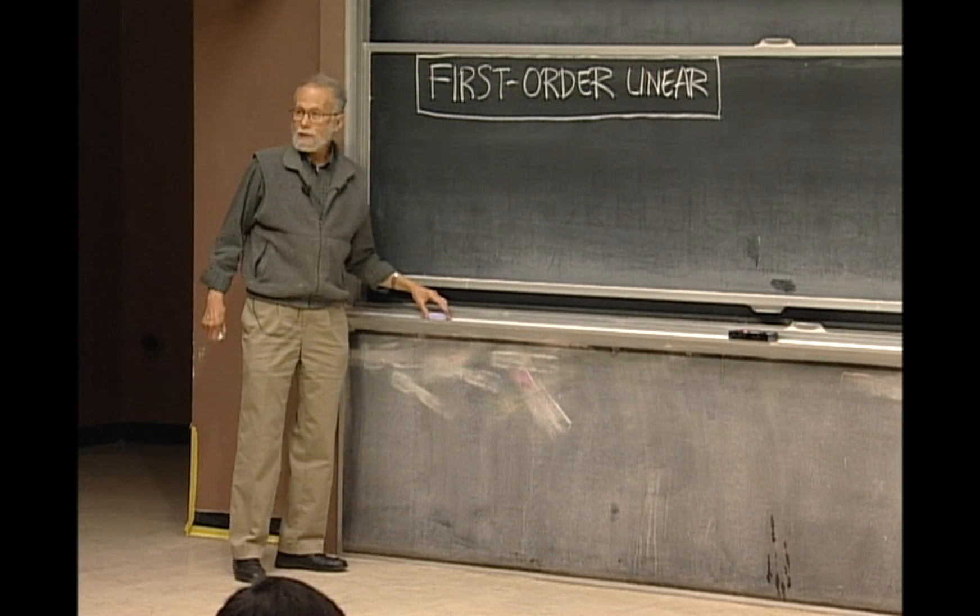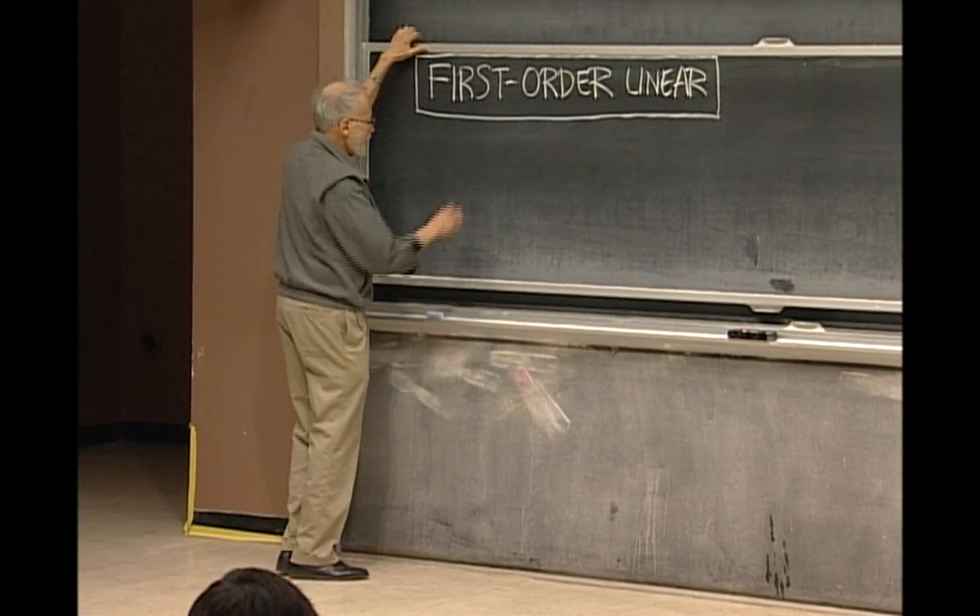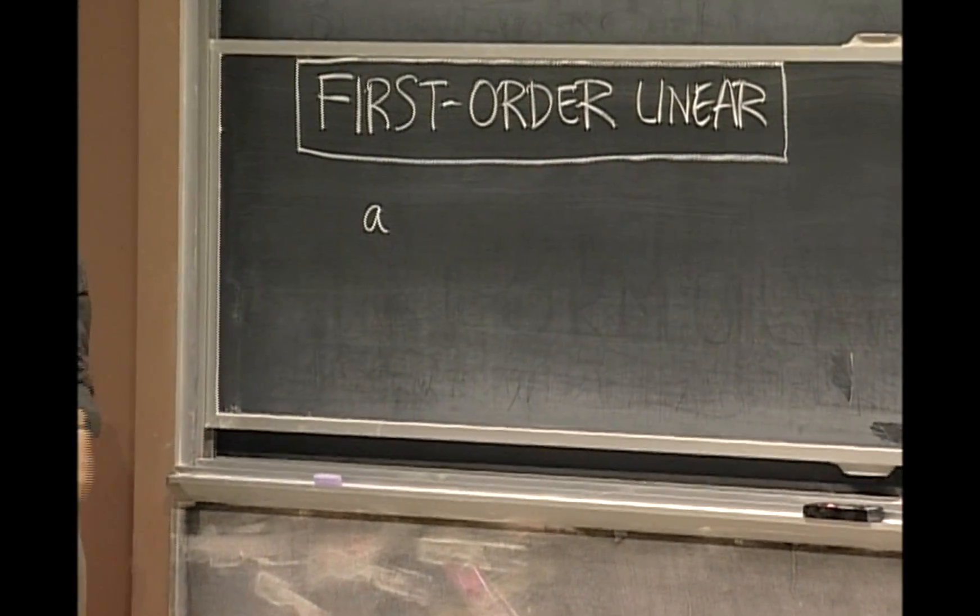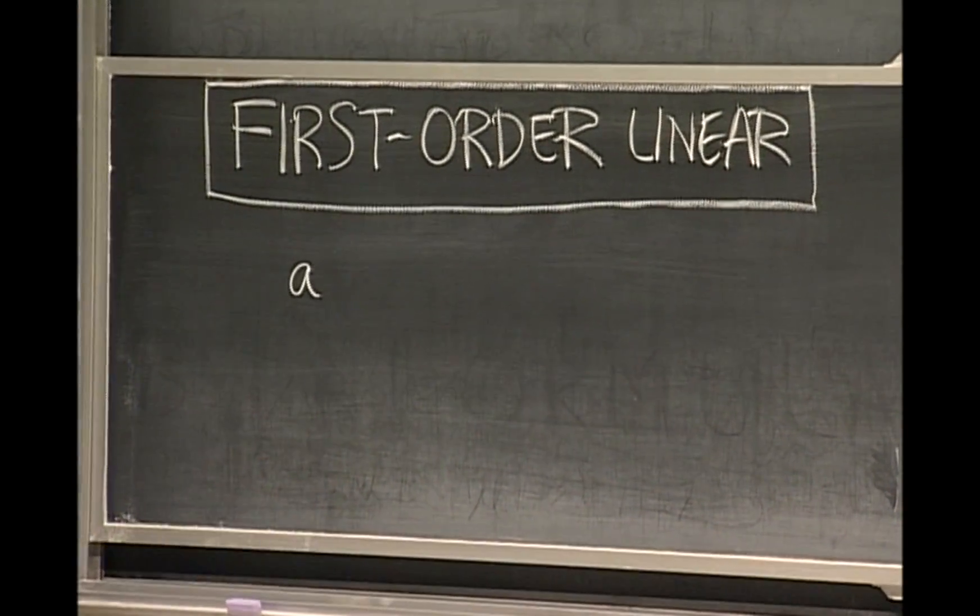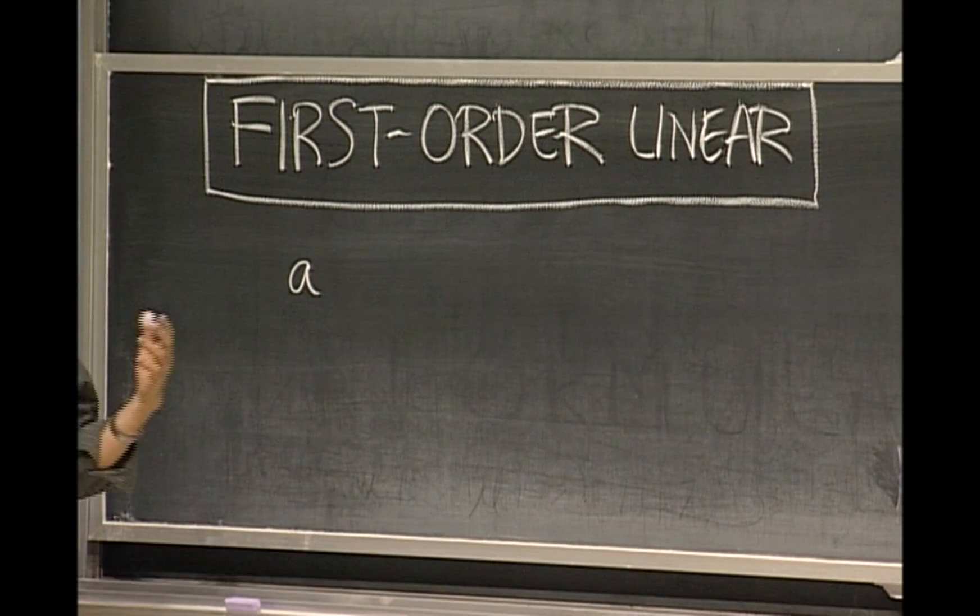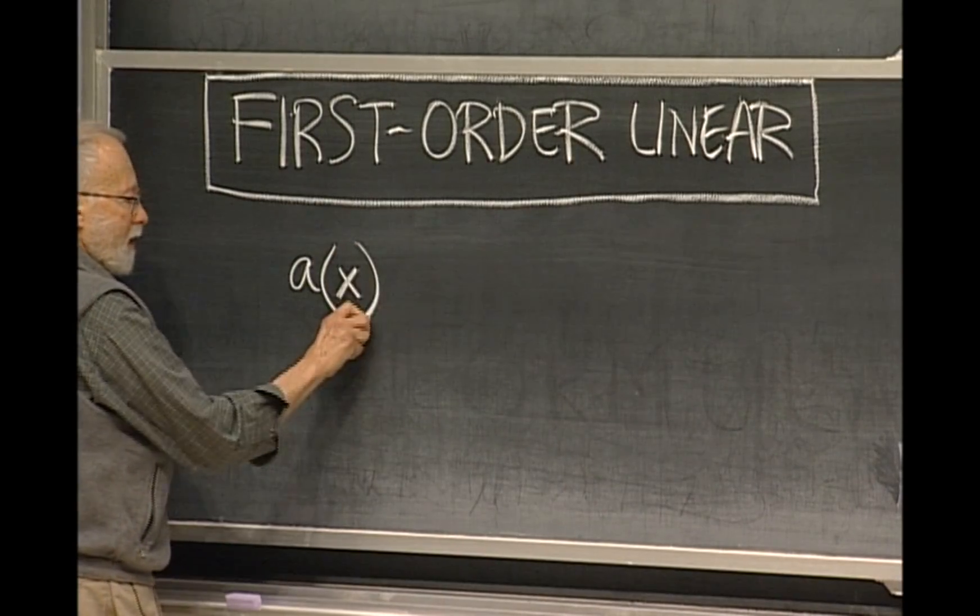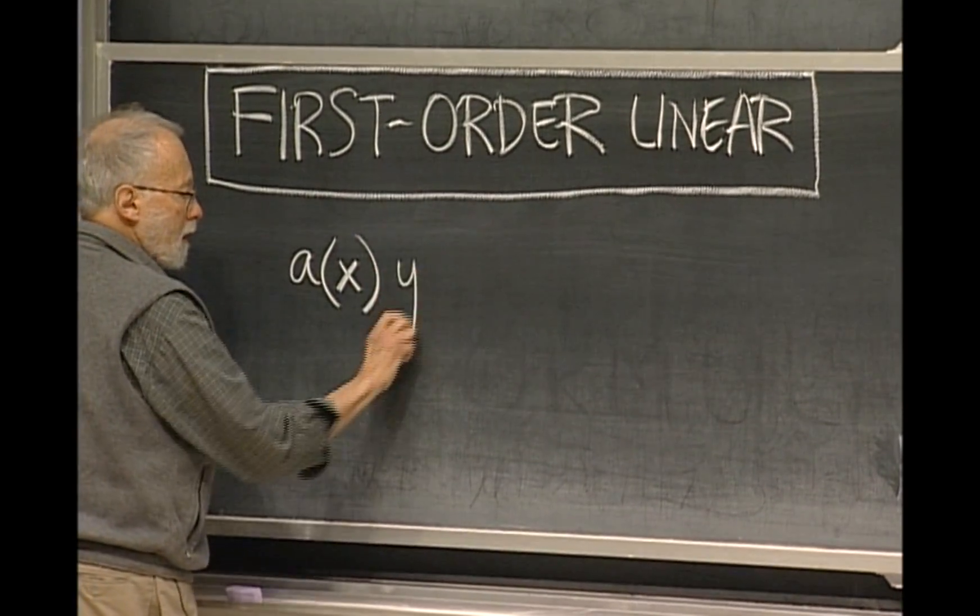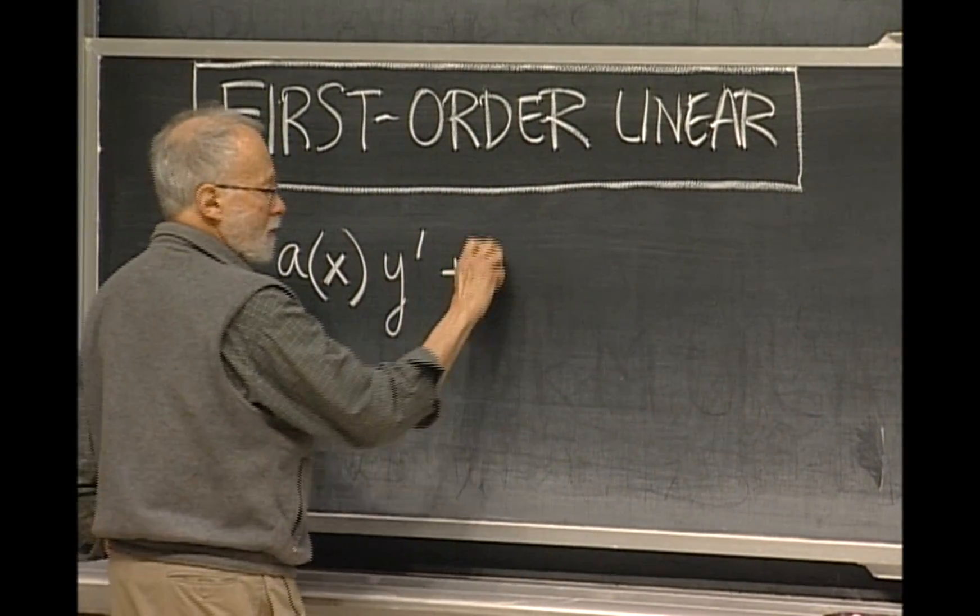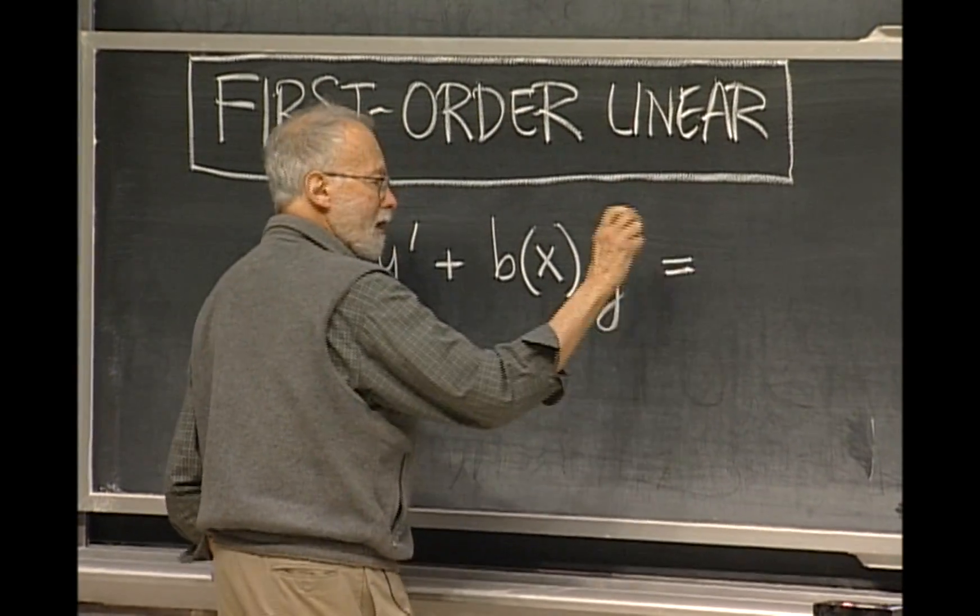So what does such an equation look like? There are several ways of writing it, but I think the most basic is this. I'm going to use x as the independent variable because that's what your book does, but in applications it's often t, time, that's the independent variable. So the equation looks like this: some function of x times y prime plus some other function of x times y is equal to yet another function of x.